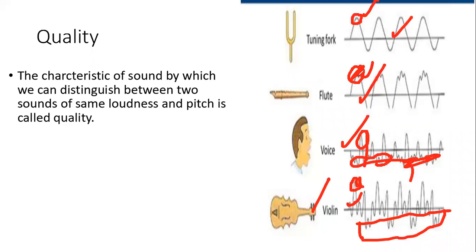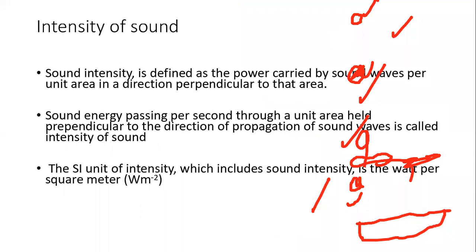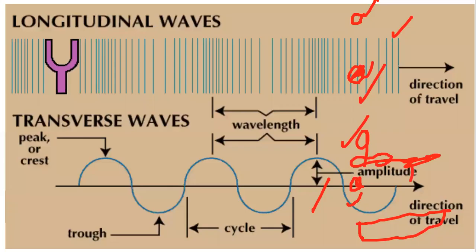We can distinguish between sounds only because of overtones. Two different sounds — sitar and guitar — have same loudness and pitch but their waveforms have different overtones. So we can distinguish between sounds which have same loudness and same pitch because of overtones present in them. Pitch is the characteristic by which a faint and a loud sound can be distinguished.